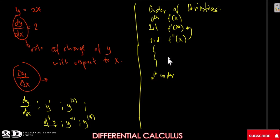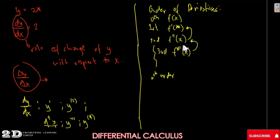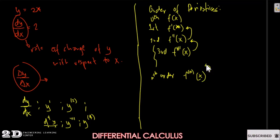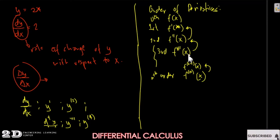We could say that the third order derivative, f triple prime of x, is the first order derivative of the second order derivative. For the nth order derivative, that will be f to the power of n in parentheses of x, which is the derivative of f to the n minus 1 of x — the order before f of n.